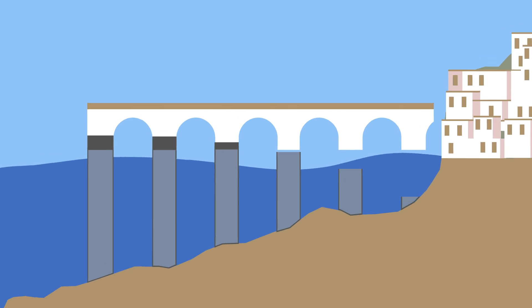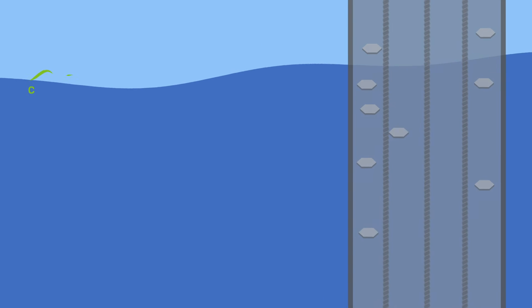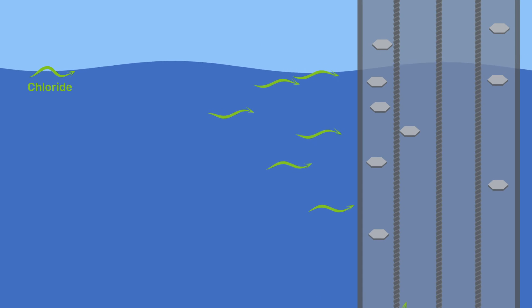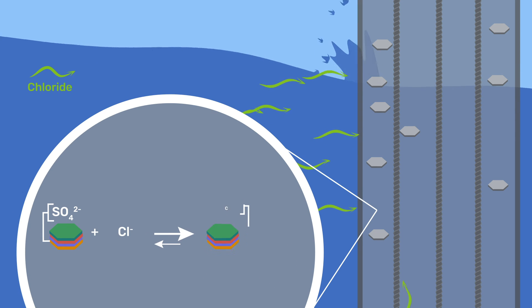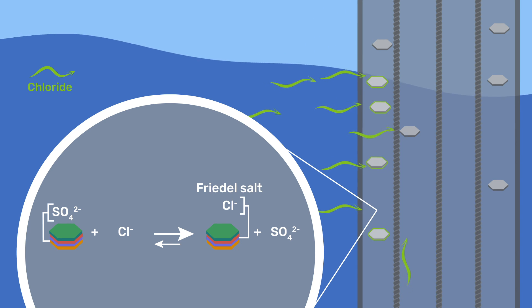On the other hand, in presence of chlorides that may come from deicing salts or seawater, monosulphate and or monocarbonate may react with incoming chlorides to form a chloride AFM phase called Friedel salt. This essentially captures chlorides and slows down their further ingress. This is beneficial in delaying the ingress of these chlorides and the corrosion of steel rebars that they enable in reinforced concrete.